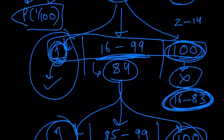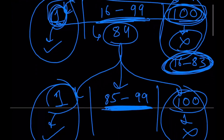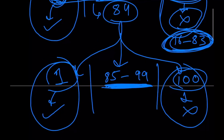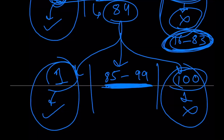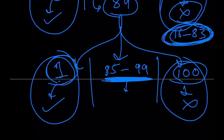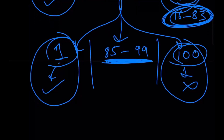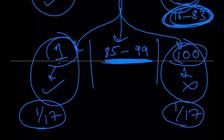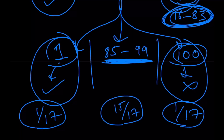P(seat 1) is just 1 over all the seats available, and P(seat 100) is also 1 over all the seats available. So at each step, the probability of success is the same as the probability of failure. The exact same happens for person 84 — 84 has 17 seats to choose from, and there's a probability of 1/17 to pick seat number one and 1/17 to pick seat number 100. There's a probability of 15/17 that we delay the decisive process even further.